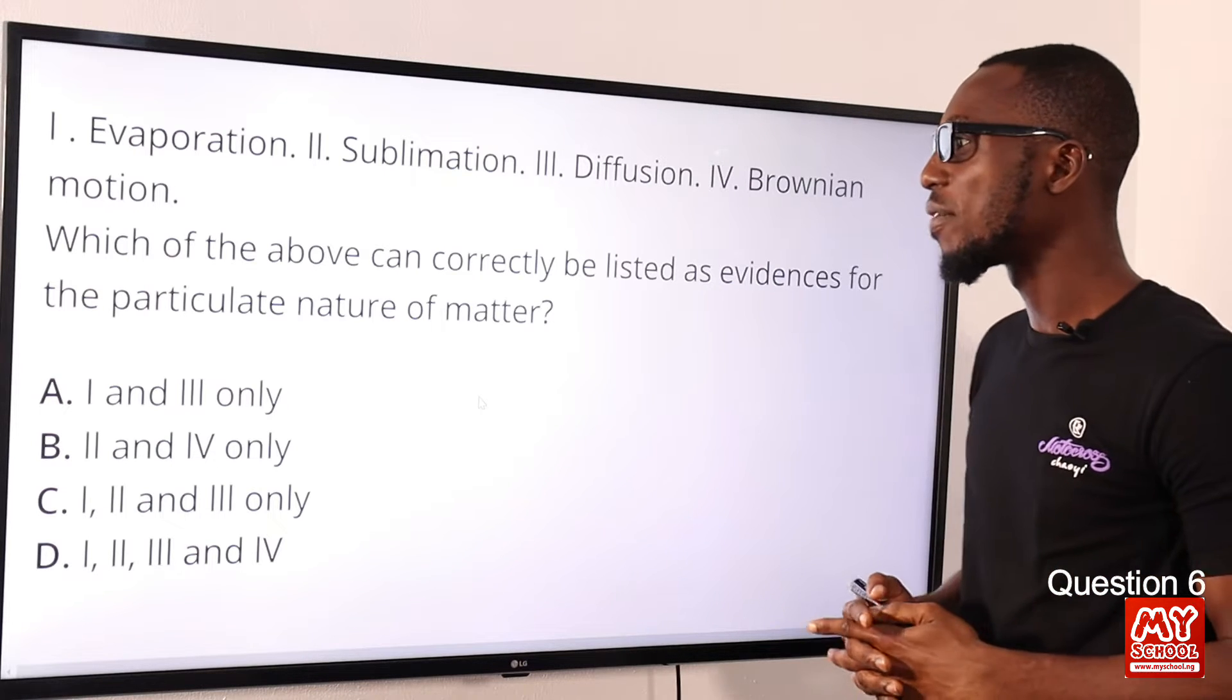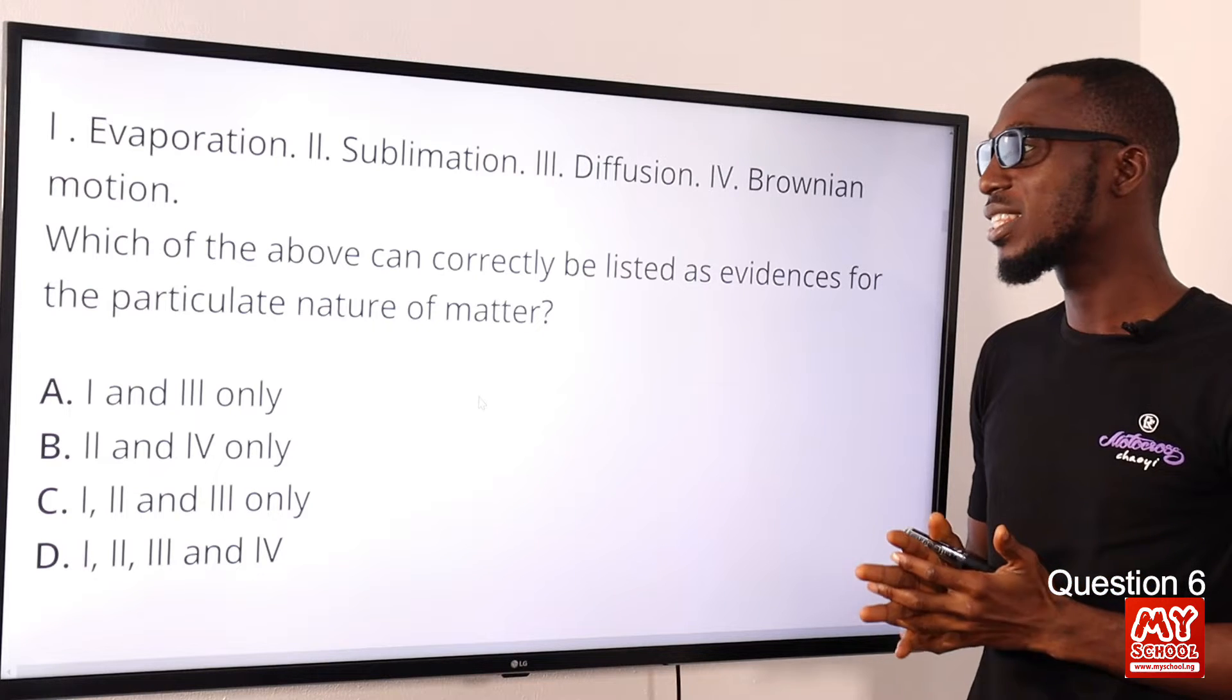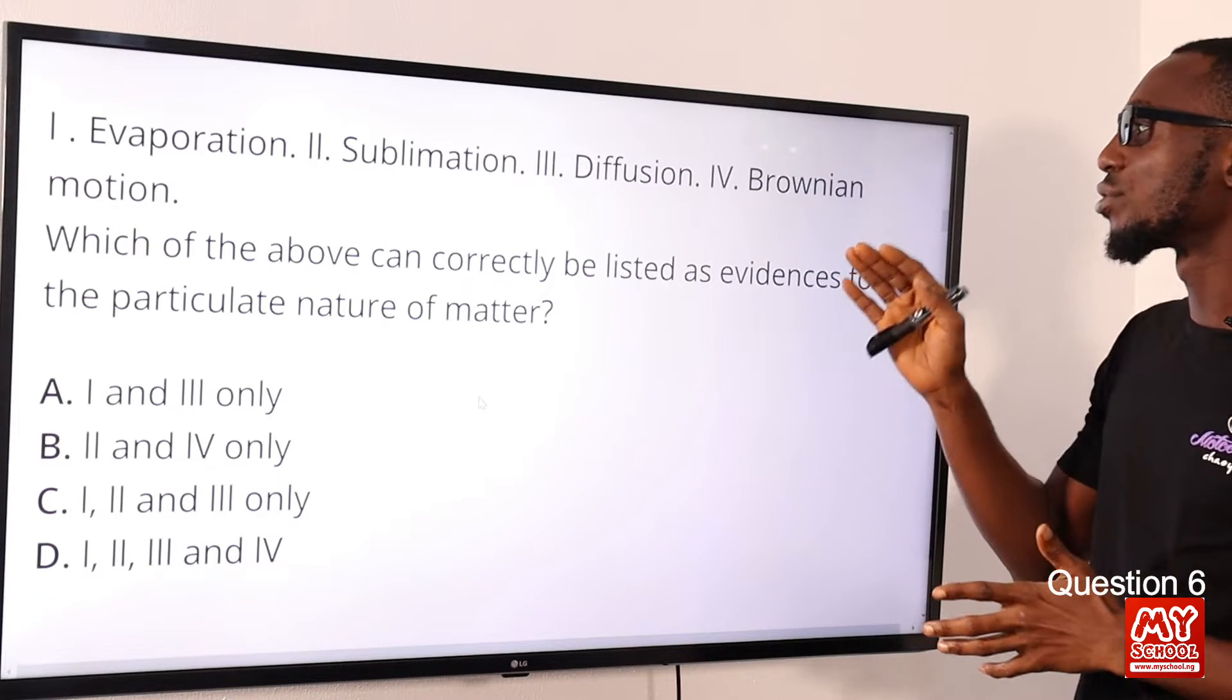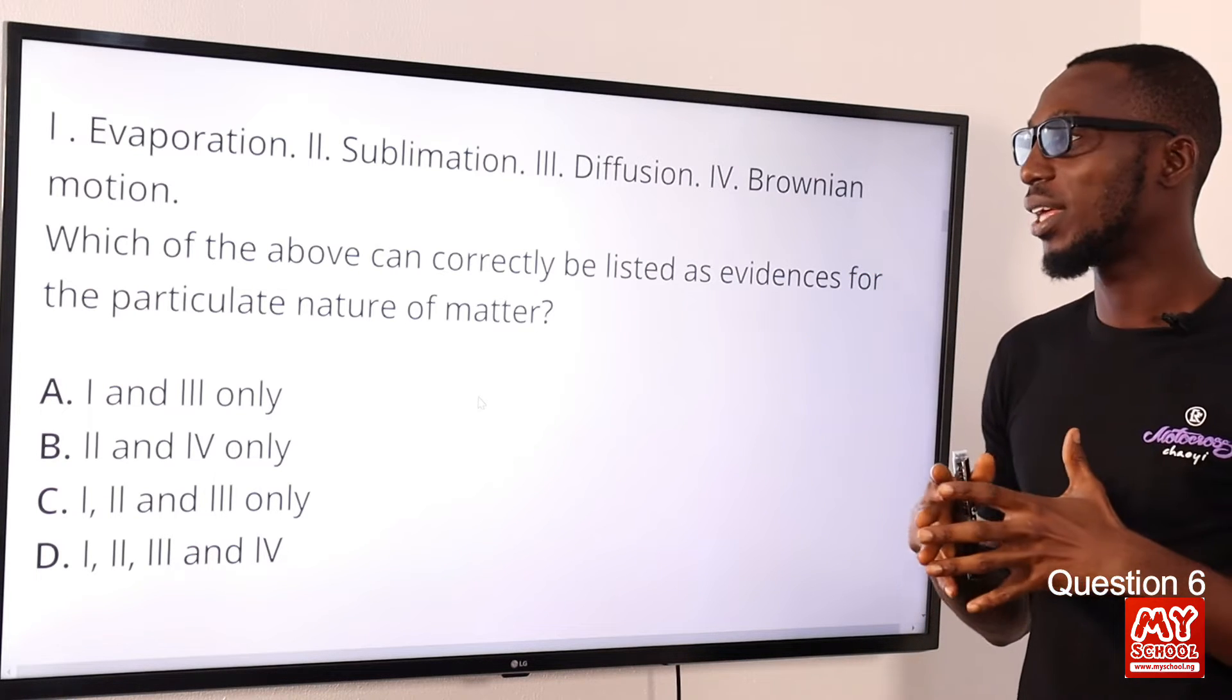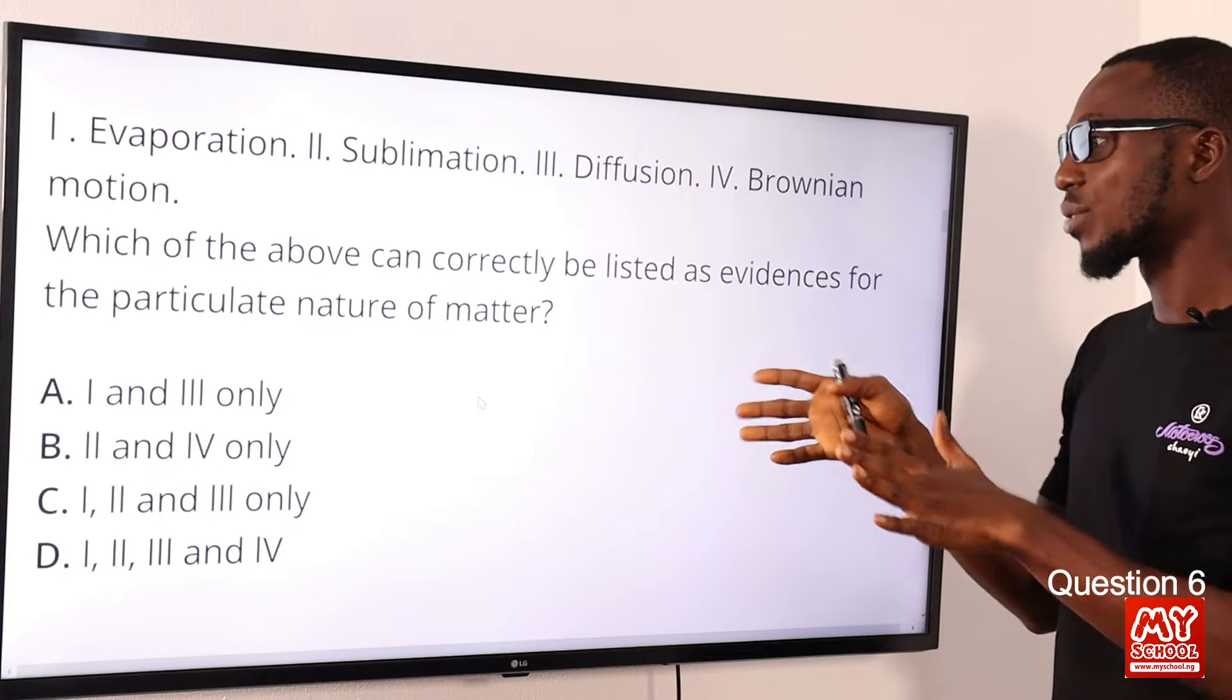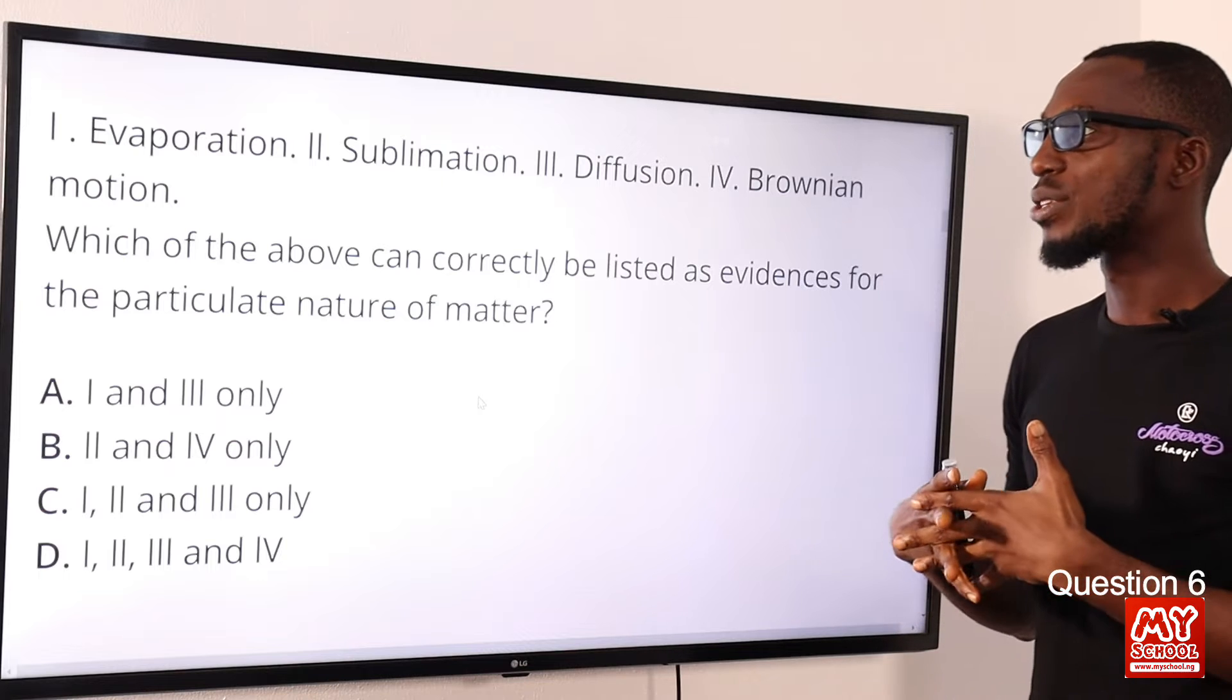Question 6: Evaporation, sublimation, diffusion, Brownian motion. Which of the above can correctly be listed as evidence for the particulate nature of matter? To be very direct, we have diffusion and Brownian motion—they have been properly introduced as evidence for the particulate nature of matter.